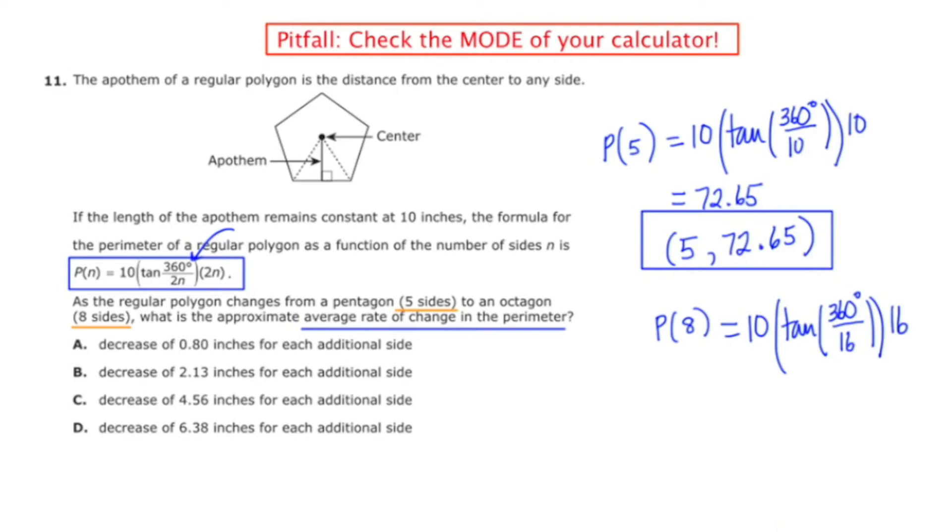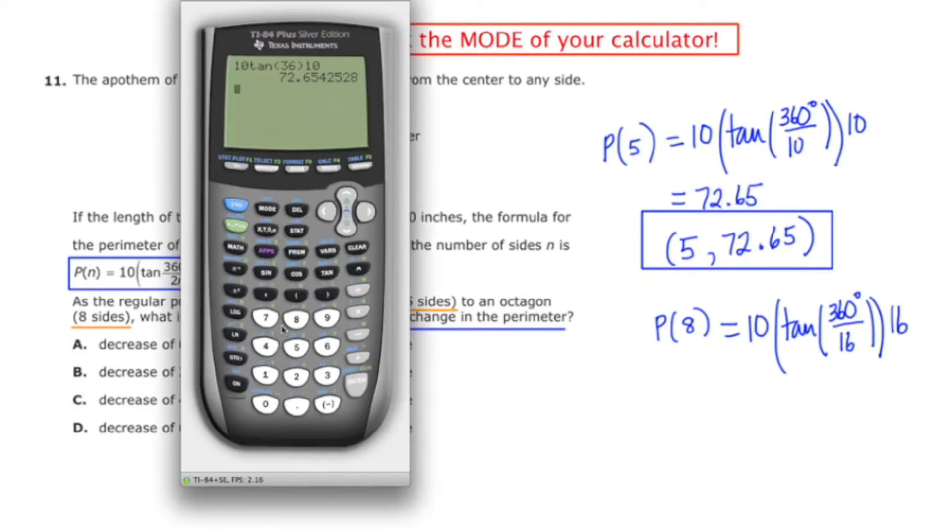And now I'm going to queue the calculator up again, and now I'm going to do the same thing: 10, tangent, now 360 divided by 16, I don't know exactly what that is, so I'm just going to put the calculation in, 360 divided by 16, and then times 16.